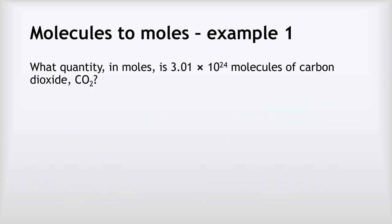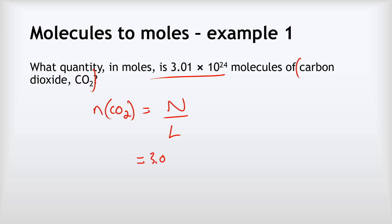Now our last three examples work the other way: converting a number of molecules back to a quantity in moles. What quantity in moles is 3.01 × 10²⁴ molecules of carbon dioxide? The identity of the molecule doesn't matter. n(CO₂) = N ÷ L = 3.01 × 10²⁴ ÷ 6.02 × 10²³ = 5.00 moles — a nice easy answer.